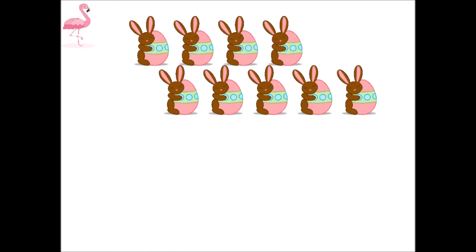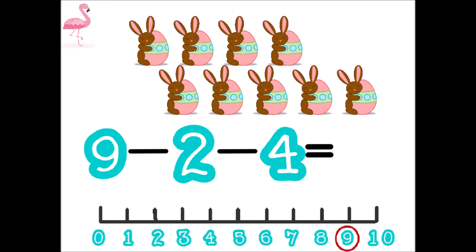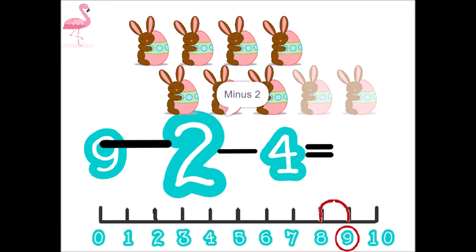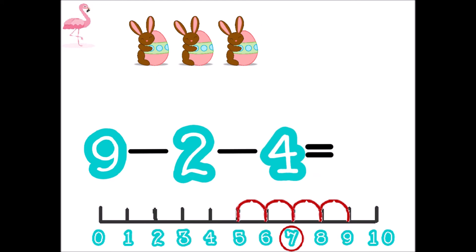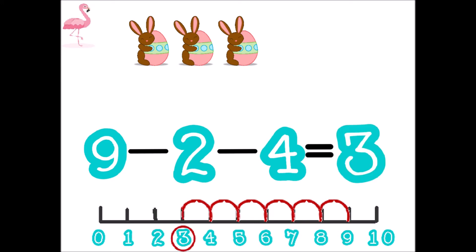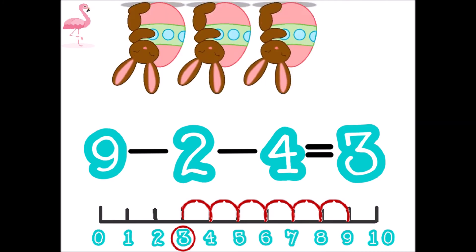Nine. Minus two minus four equal two. Seven, eight, nine, and ten. You and I, my friend, we can count to ten. One, two, three, four, six, seven, eight, nine, ten.